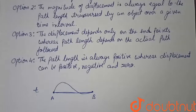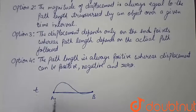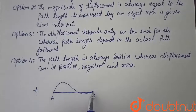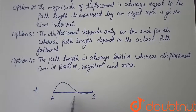Option 3 states that displacement depends only on the end point whereas path length depends on the actual path followed. Yes, displacement depends only on the end positions — in this case A and B — and path length is the actual path followed. This statement is correct.